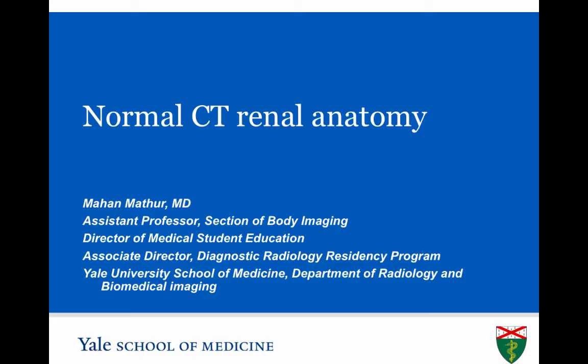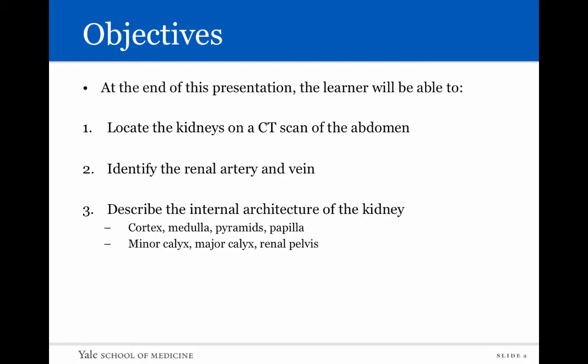This video covers normal CT renal anatomy. At the end of this presentation, the learner will be able to: locate the kidneys on a CT scan of the abdomen; identify the renal artery and vein; and describe the internal architecture of the kidney. Specific terms include the cortex, the medulla, pyramids and papilla, as well as the minor and major calyx, and the renal pelvis.